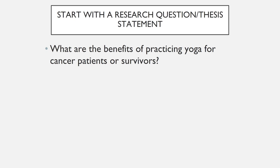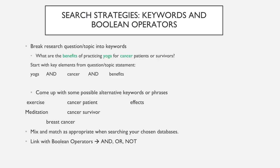Your research question, or thesis statement, will be a way of strategically organizing the key concepts of your topic. Once you have your research question, you will be able to extract these concepts which will make up the foundation for forming your keywords. One of the hardest parts of searching for information is coming up with the best words to describe what you are looking for. This is why brainstorming and coming up with different search strategies is so important, but there are some methods for creating searches that can help.